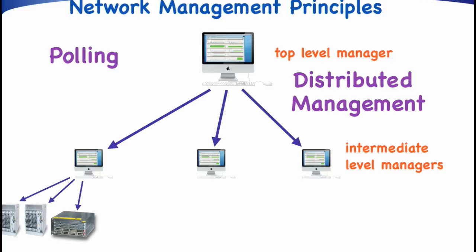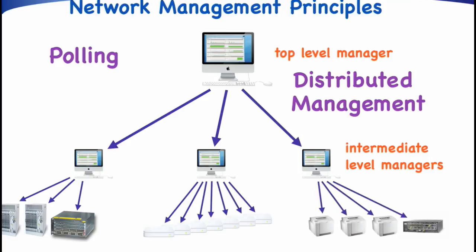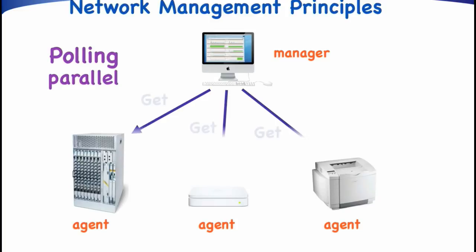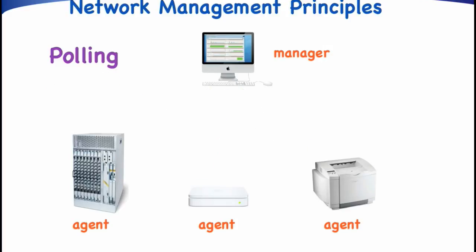Intermediate-level managers may be tailored to the polling of one specific type of agent, such as routers, or generic for all kinds of agents. Within the IETF, the protocols and information for such management hierarchies have been defined by the distributed management working group. Instead of sequentially polling all agents, the manager can also poll all agents in parallel. Care should be taken, however, to not generate too much management traffic at the same time, and we have to poll all agents again after a certain period, which is often a 5-minute interval.